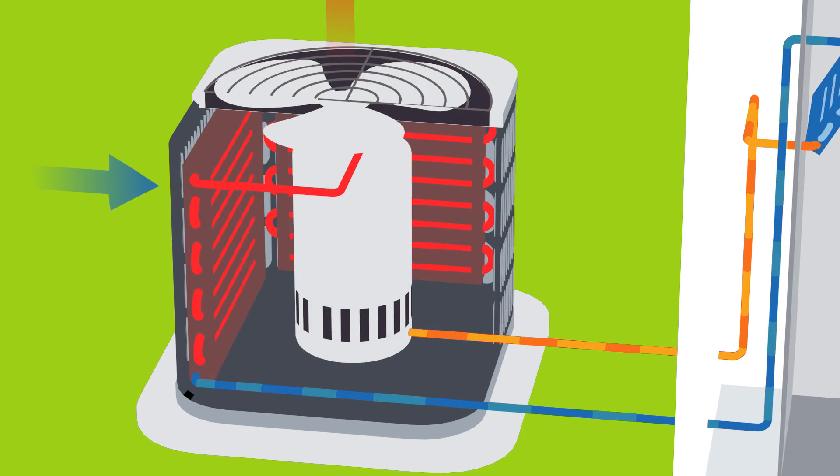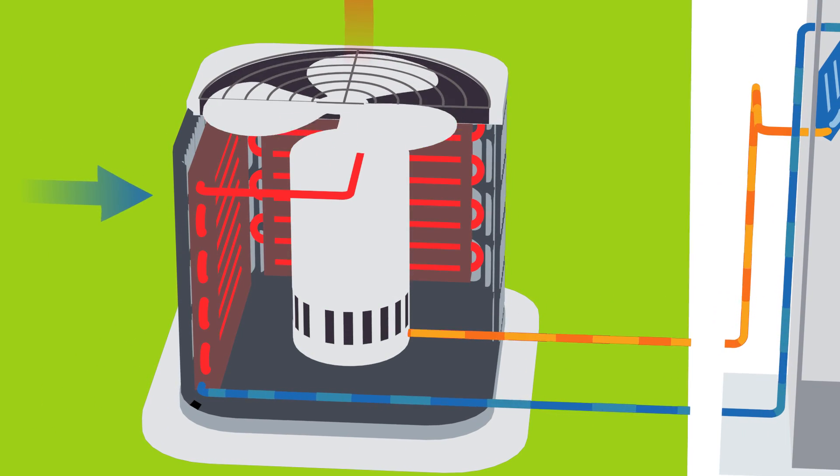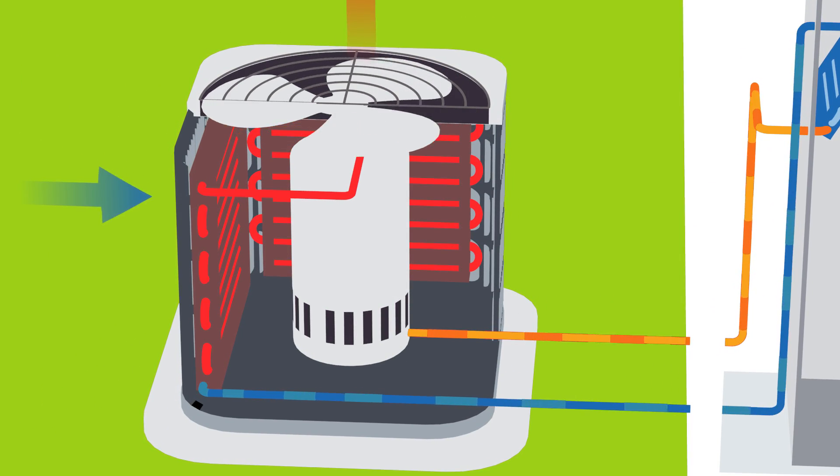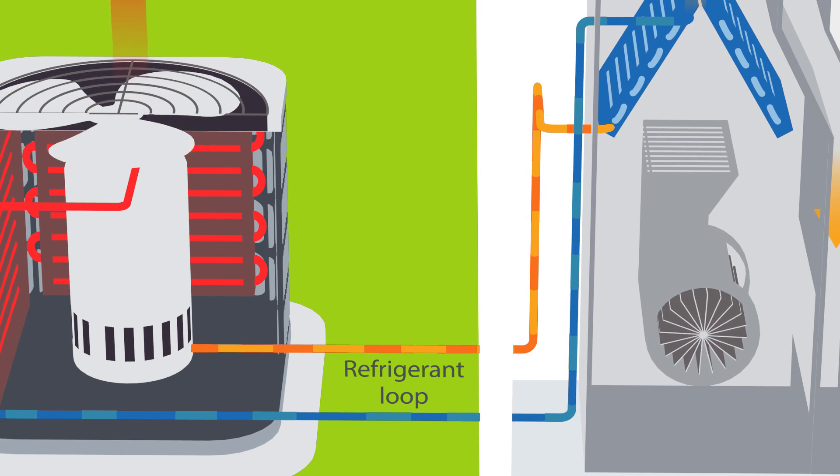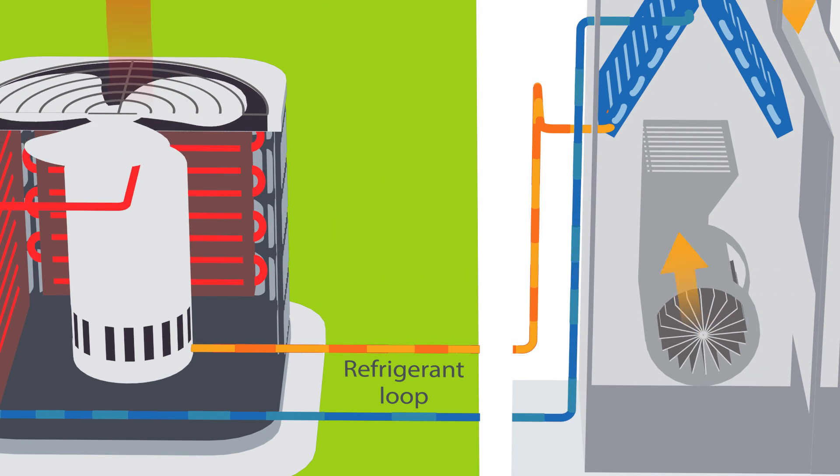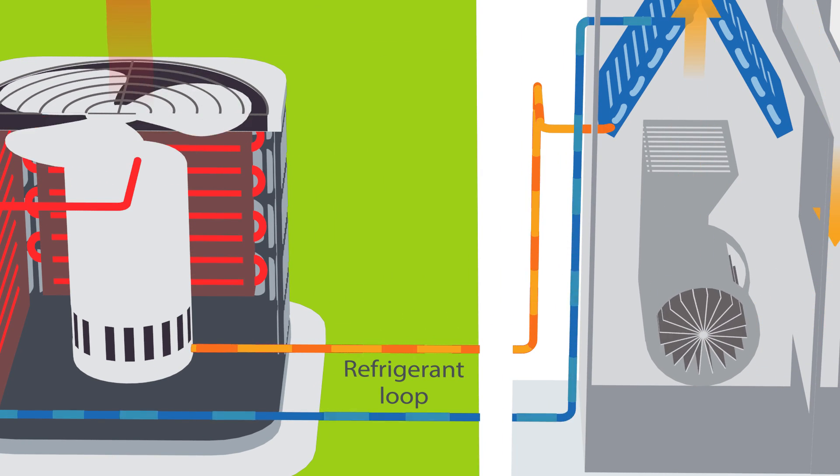Outside, the opposite happens. That same refrigerant is cooled by outside air. So the refrigerant is in a loop constantly cooling indoor air and then getting cooled itself by the air outside.